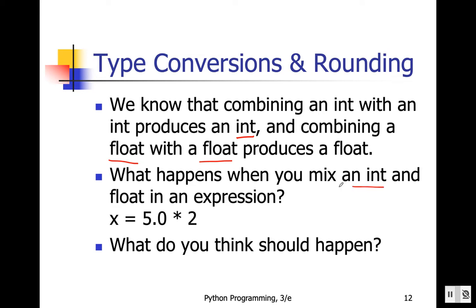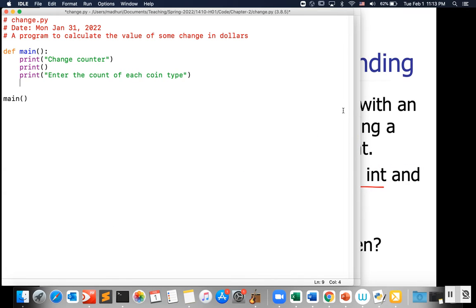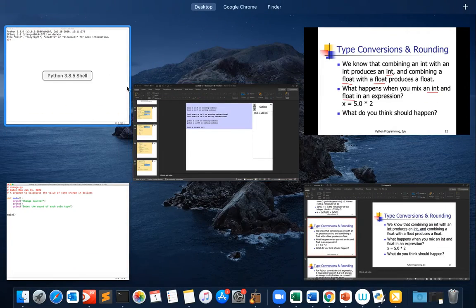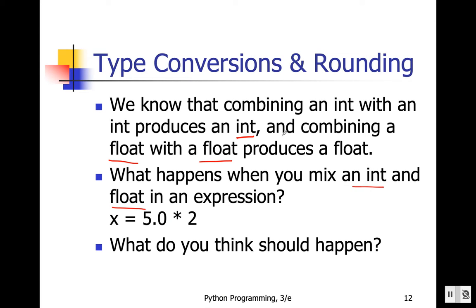Now, what happens if we mix an integer data type and a float in an expression? For example, 5 times 2 — integer times integer — will produce an integer. But any operation involving a float is going to produce a float. So that means this value will be a float value: 10.0.